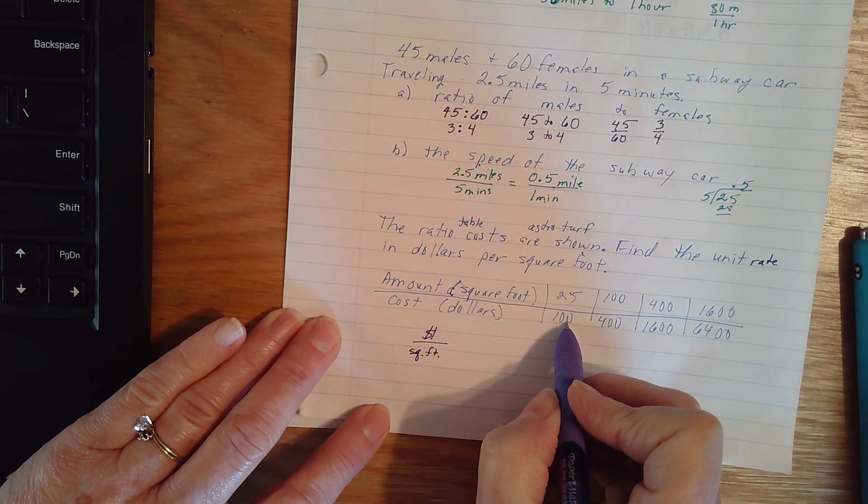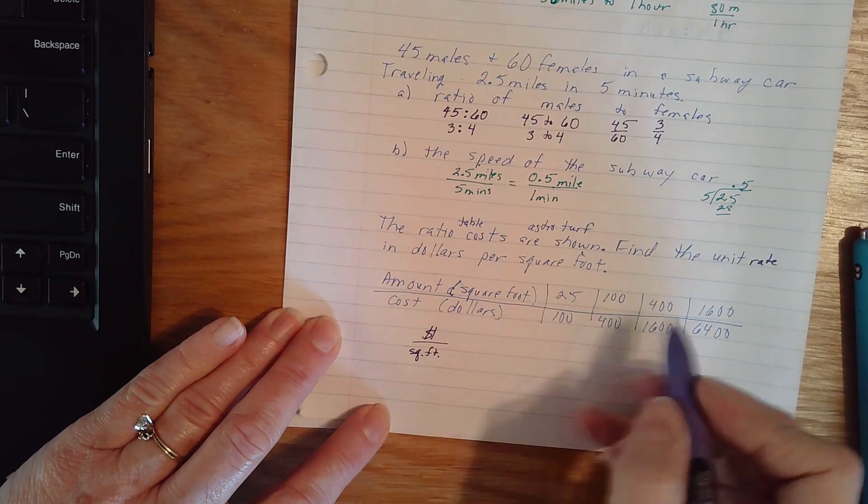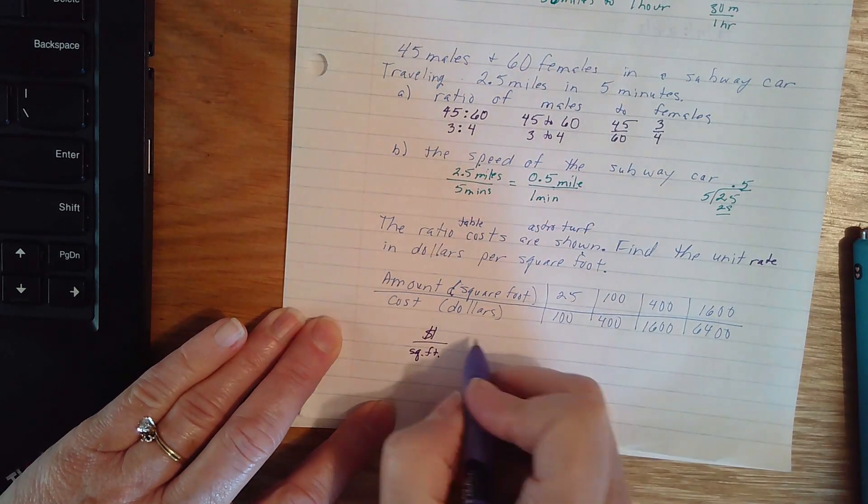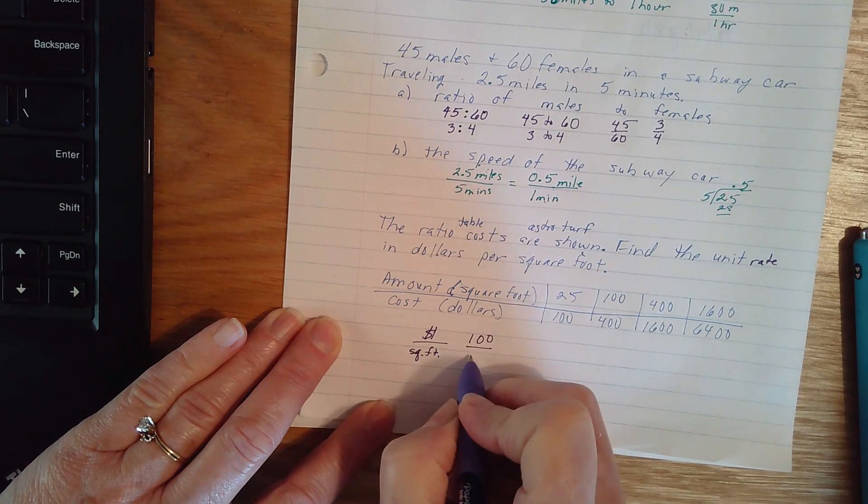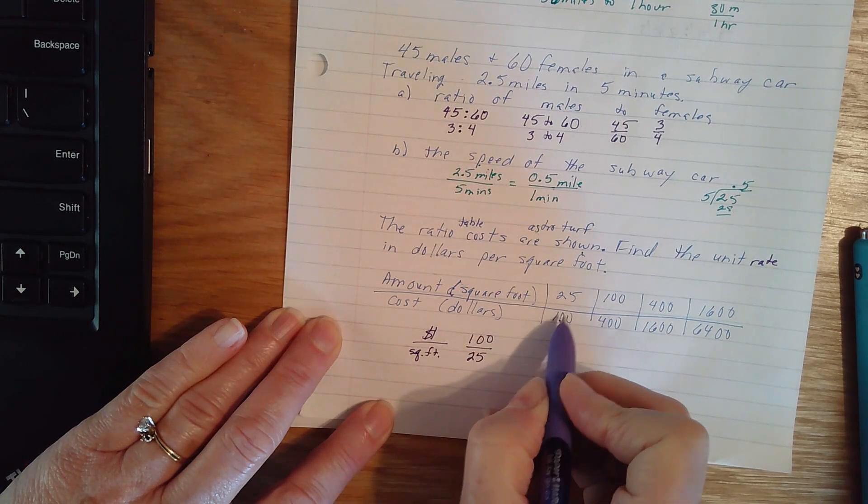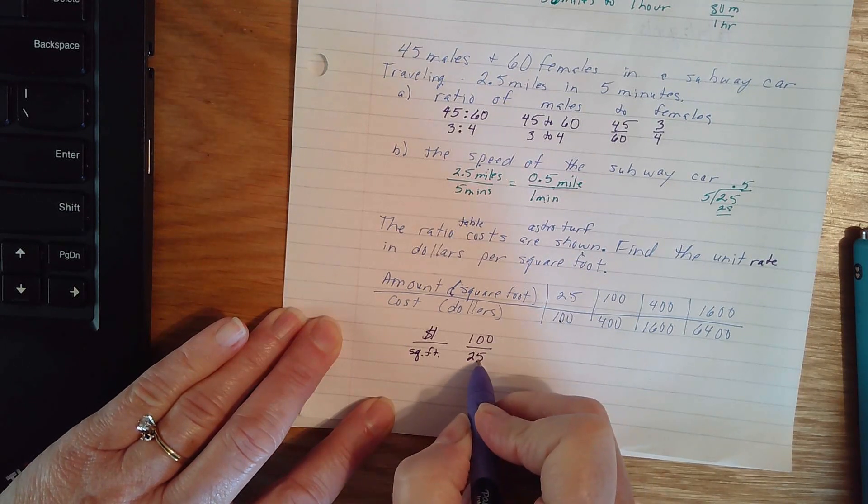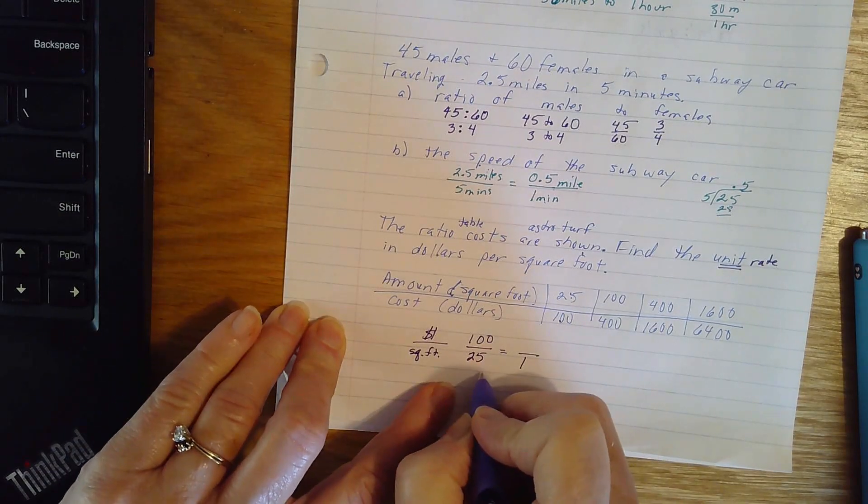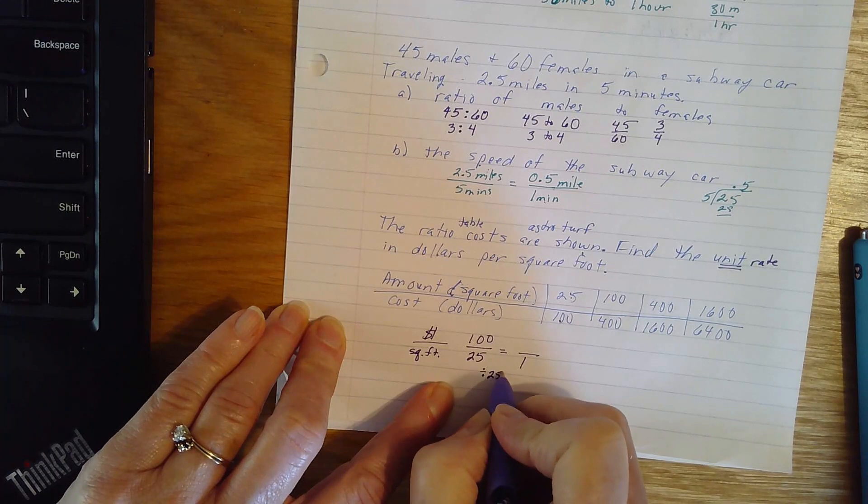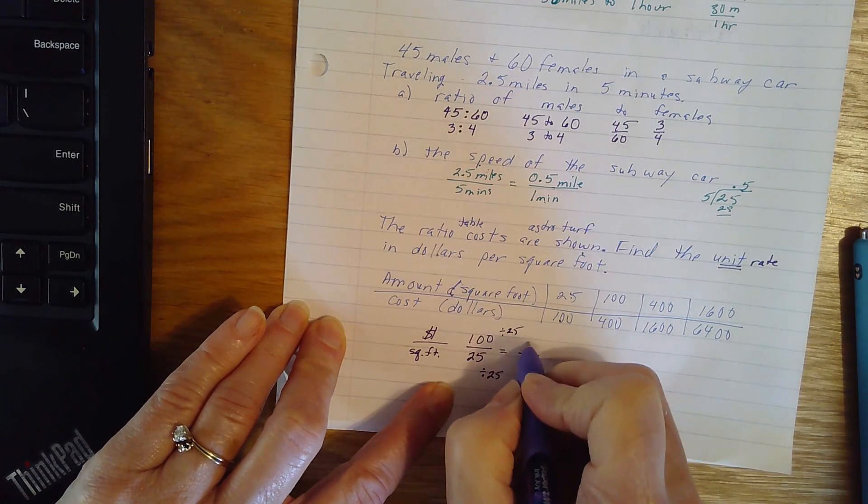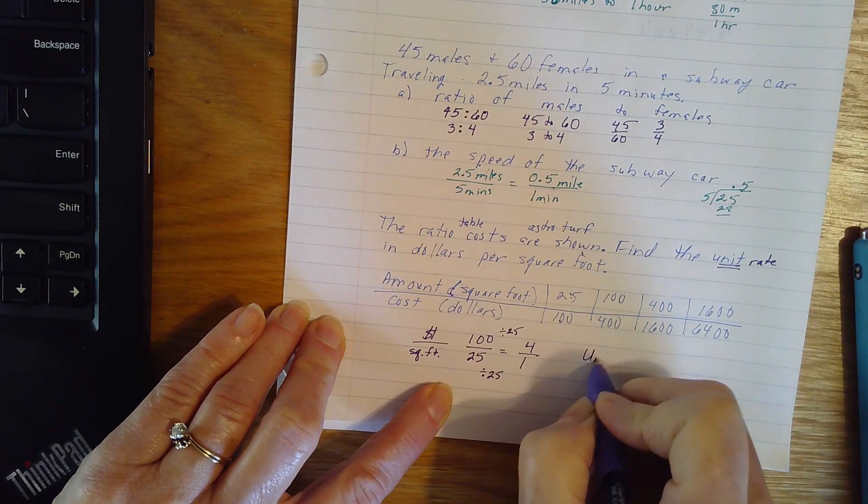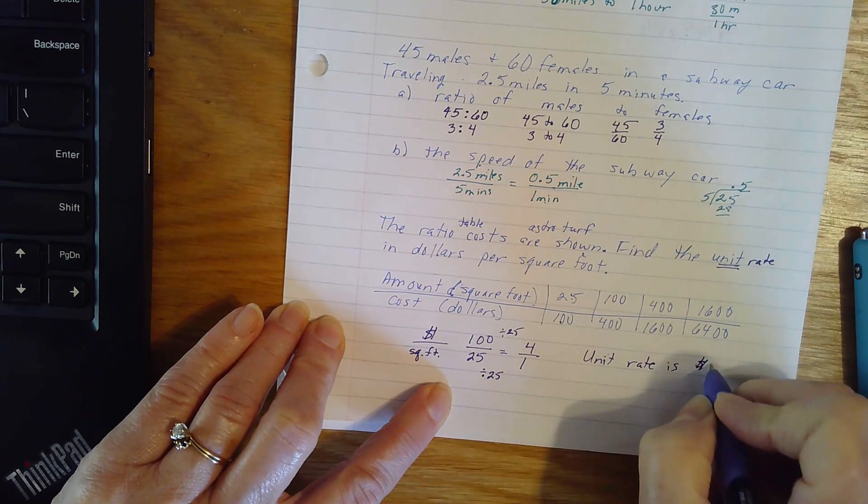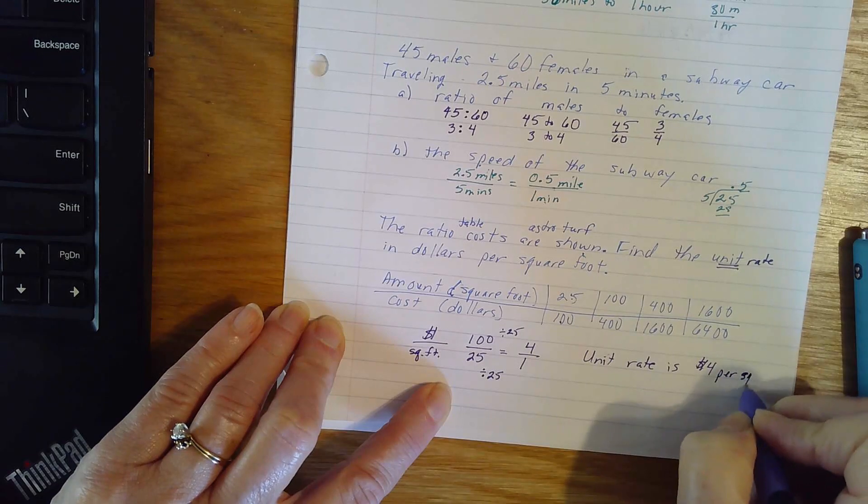And I see that it's $100 to 25 square feet. $400 to 100 square feet. So it's not going to matter which one I start with. I'm going to get to this same one regardless. Dollars per square foot. Well, that's not a unit rate. We were asked for a unit rate. This would be per one.